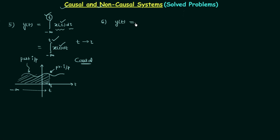Let's move to problem number 6 to understand how a system performing integration can be non-causal. This time the output y(t) is equal to the integration from minus infinity to t+1 of x(τ)dτ. Here is one simple way to find out if the system is causal or non-causal: simply substitute τ equal to t+1, which gives you x(t+1).